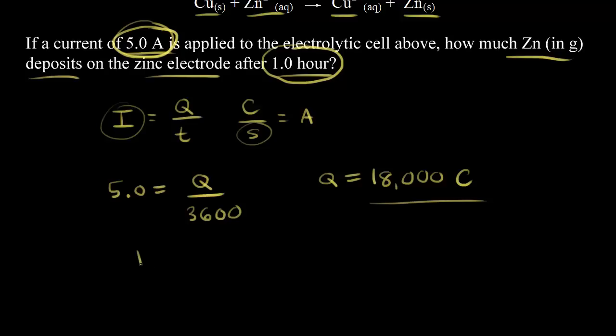If we have 18,000 Coulombs, and we're trying to find how many moles of electrons that is, we would need to divide by Faraday's constant. So 18,000 divided by 96,500, which is Faraday's constant, the charge of one mole of electrons.